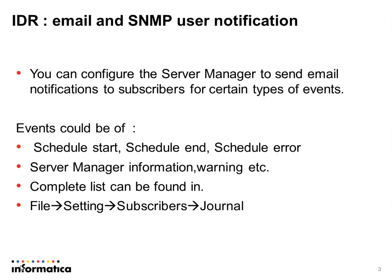You can configure the server manager to send email notifications to subscribers for certain types of events. These events could be schedule start, schedule end, schedule error, task start, task end, task error, server manager warning, server manager information, etc. The complete list can be found when you click on File, go to Settings, then go to the Subscribers tab, then click on the Journal sub-tab. There you will get a complete list of events that can be used to send email notifications to the subscriber's email.